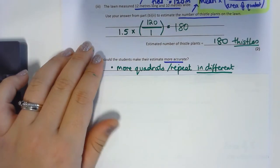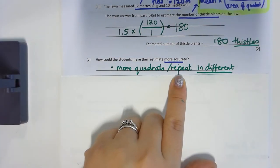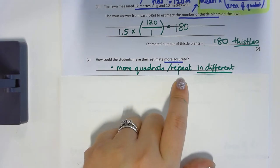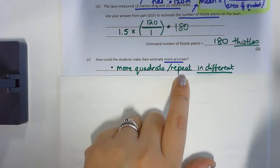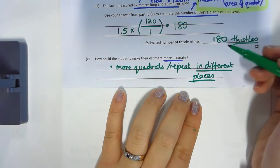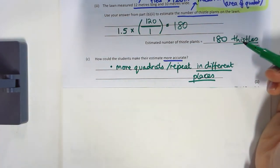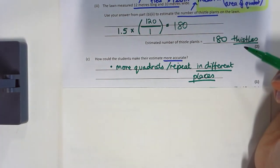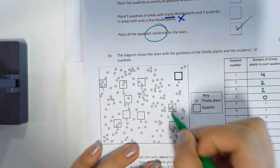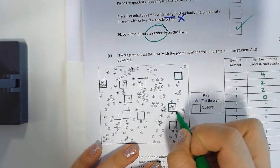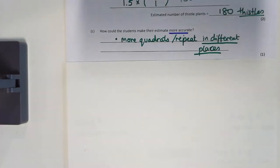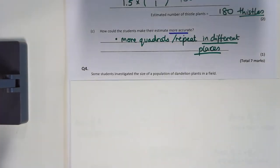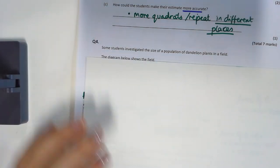To make the results more accurate, the students can repeat the quadrat placements — but importantly they must place them in different places each time. It has to be random, placing quadrats at different positions, not the same spots again.